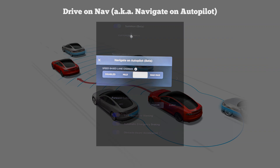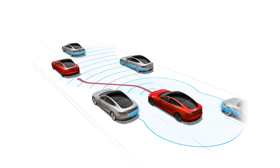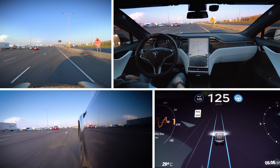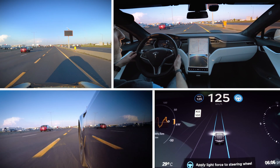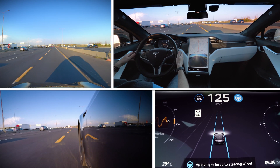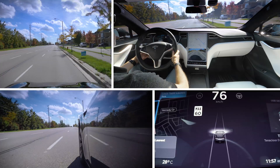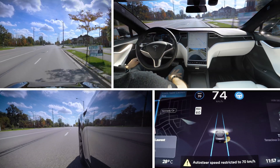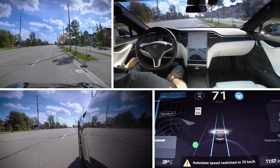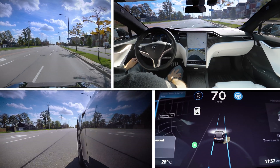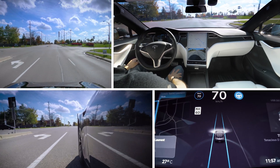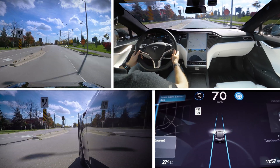Drive on Nav will automatically take the required exit if you have a destination entered in the navigation system — you can bet I'll be putting it through some thorough testing once that becomes available. The updated display now also shows multiple lanes to each side of your vehicle; I've seen up to four lanes displayed on one side in version 9. Another big change is the ability to perform automatic lane changes on minor highways and even city streets, which was previously only available on major highways, providing many more opportunities to use Autopilot in heavier traffic.